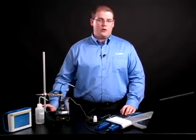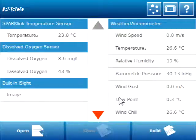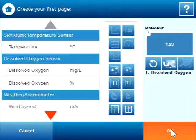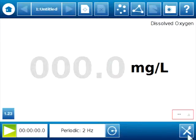Next, we need to open or create a lab file. I'm going to build a simple page with a digits display of dissolved oxygen in milligrams per liter. Next, we need to open Experiment Tools.